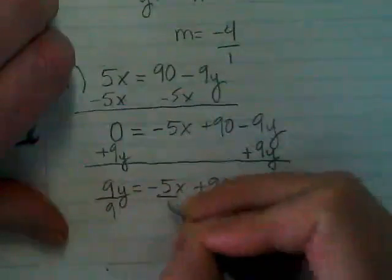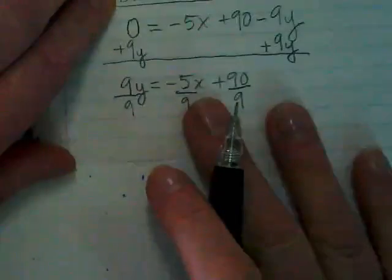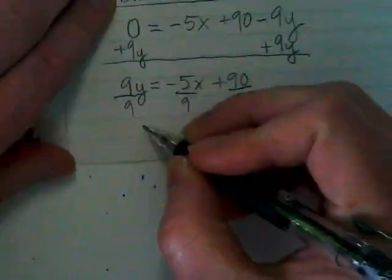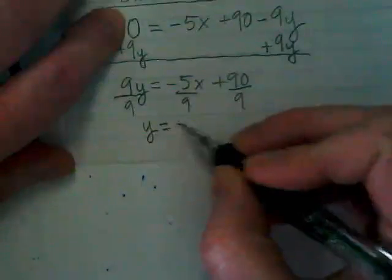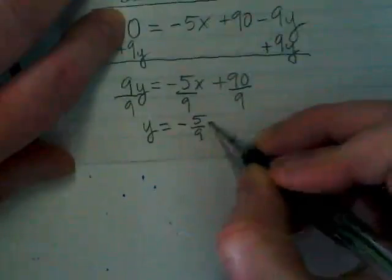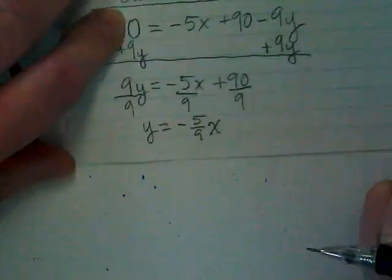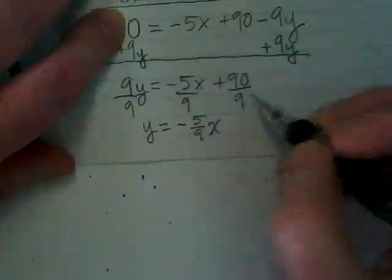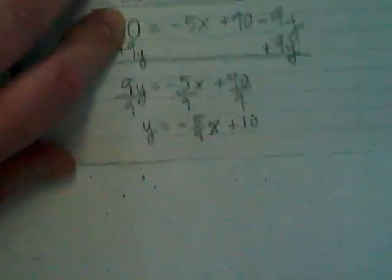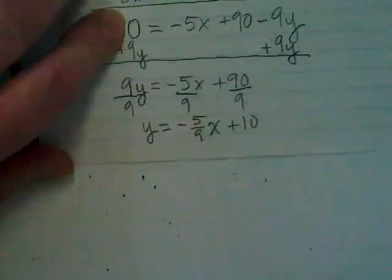If I divide everything by 9, I want you to watch what happens with my slope piece of this. 9 over 9 becomes just Y. I'm going to rewrite this as negative 5 over 9X. Do you see I took the X out of the fraction? I just placed it next to it. And then 90 divided by 9 is 10. Okay, so keeping in mind Y equals MX plus B when you're trying to solve for slope, you're just putting all the pieces in the right places and getting the Y by itself and you'll find your slope.